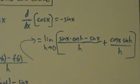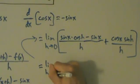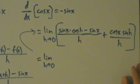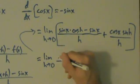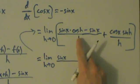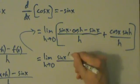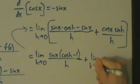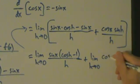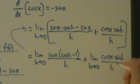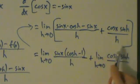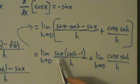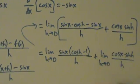We're still taking a limit of everything. The limit of a sum is the sum of the limits. Here in the first fraction, let's also factor out sine x. So we have the limit as h goes to 0 of sine x times the quantity cosine h minus 1, all over h, plus the limit as h goes to 0 of cosine x times sine h over h.